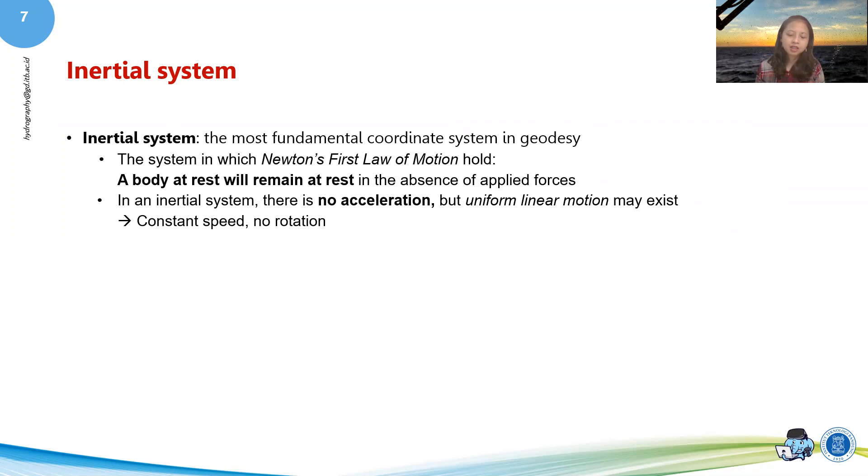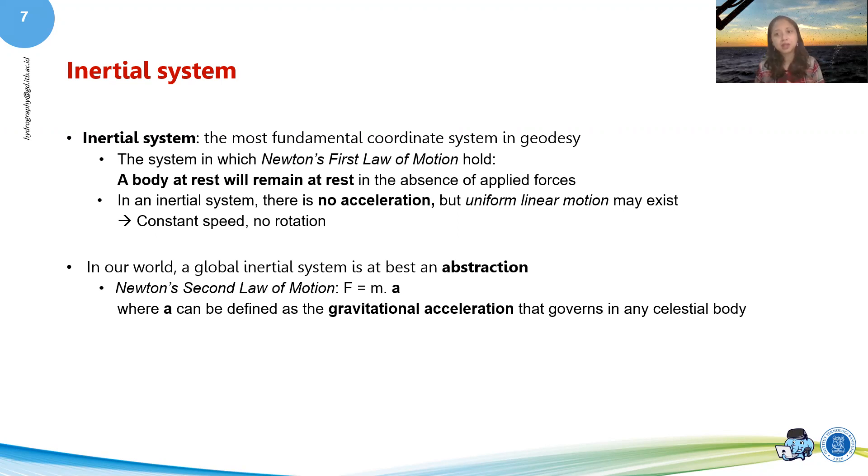So you might think that this system does not make any sense because if there is only uniform linear motion, when will it end? And also a body at rest will remain at rest. But basically, there is always the pull of gravity. So an inertial system is at best an abstraction in our world. Because you need to take into account Newton's second law, which is F equals M and A, in which force equals mass and acceleration. And acceleration in here can be defined as the gravitational acceleration that governs in any celestial body. So even if a body is at rest, there's always a gravitational attraction in any of this body.